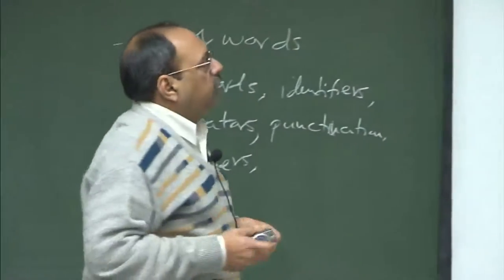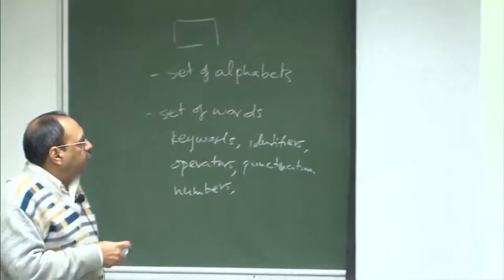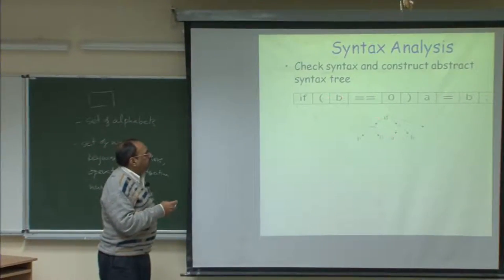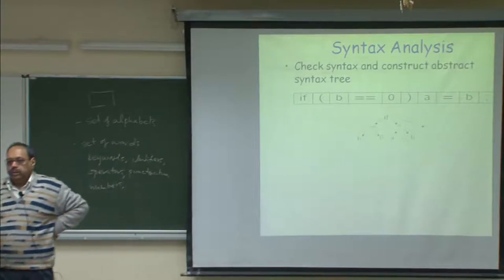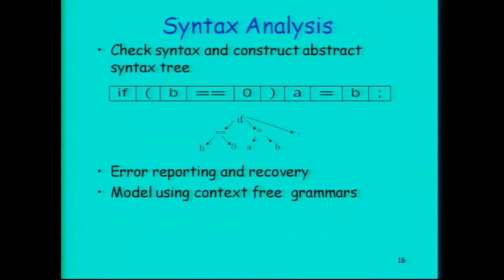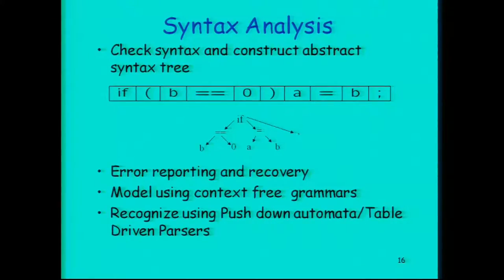For syntax analysis, the input is a sequence of tokens and the output is a parse tree. If it cannot be put in a valid structure, it flags an error and tries to recover — meaning it skips the error and continues analyzing the rest of the program to find more errors. We want to read as much of the program as possible to find more errors. Syntax analysis is modeled using context-free grammars and implemented with pushdown automata or table-driven parsers.